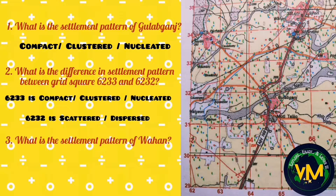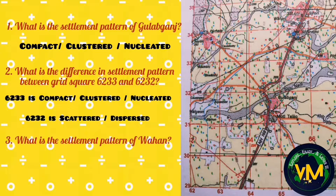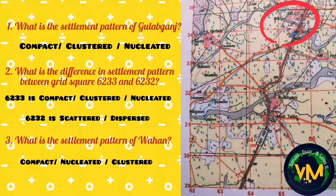Look at 6232 — here the huts are located a little far away from each other, so it is dispersed or scattered settlement pattern. Third one, Vahan — this is also a compact or nucleated settlement pattern. If you notice the last 10 or 15 years of board exam questions, 99.9% of the time the settlement patterns will be either clustered or scattered.